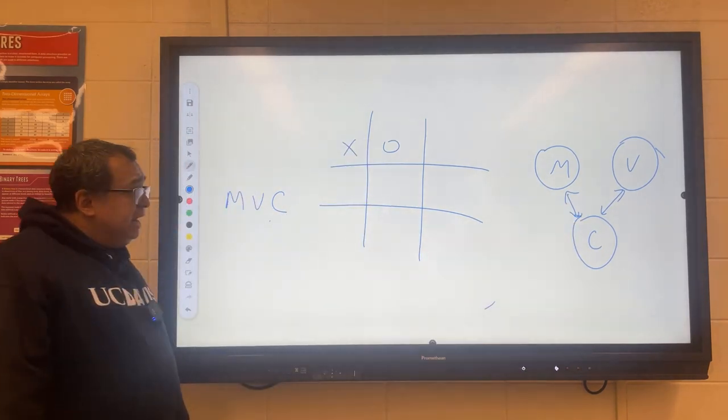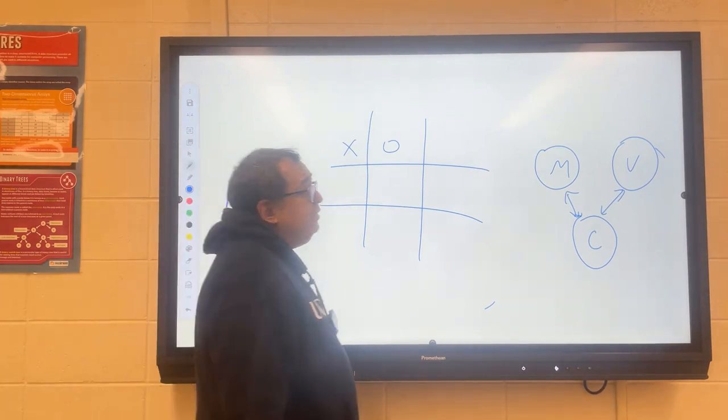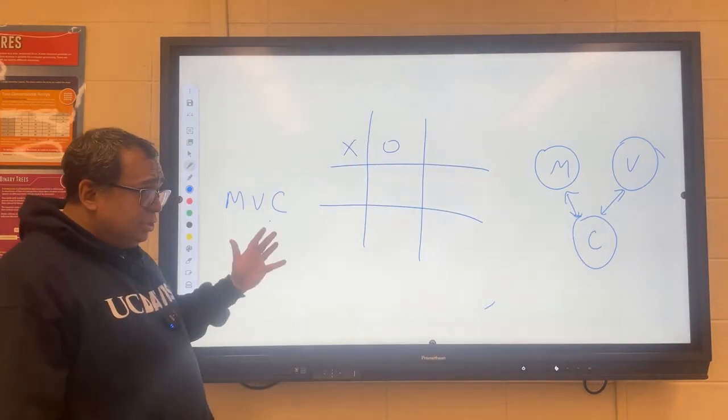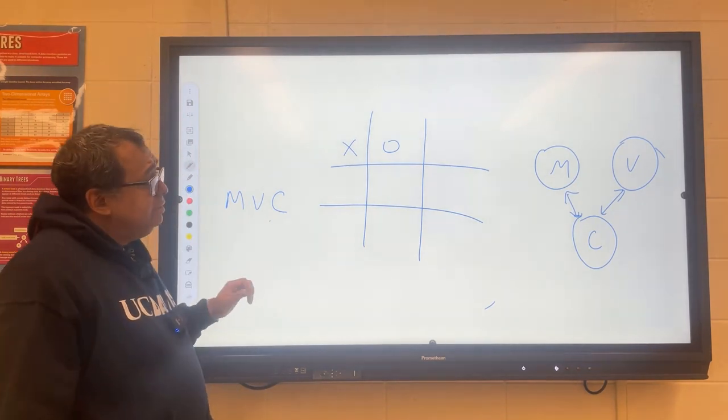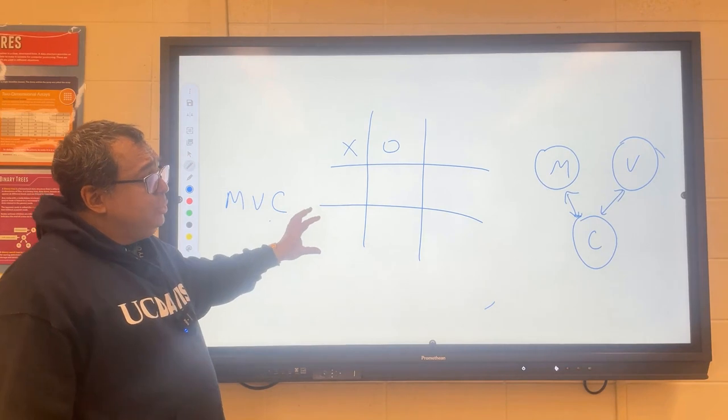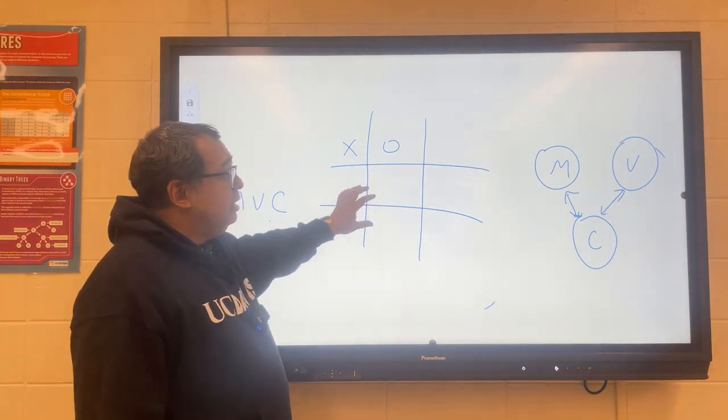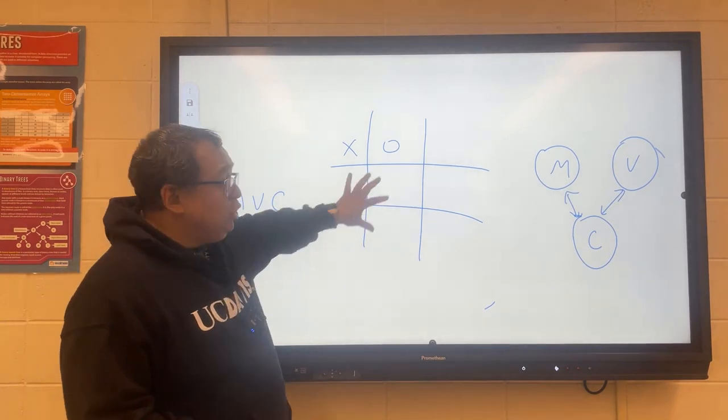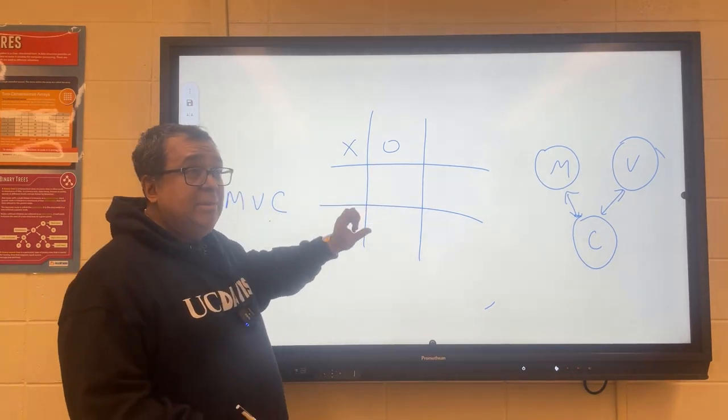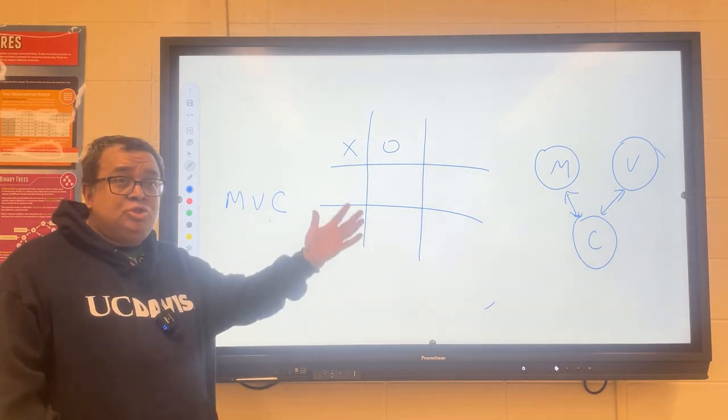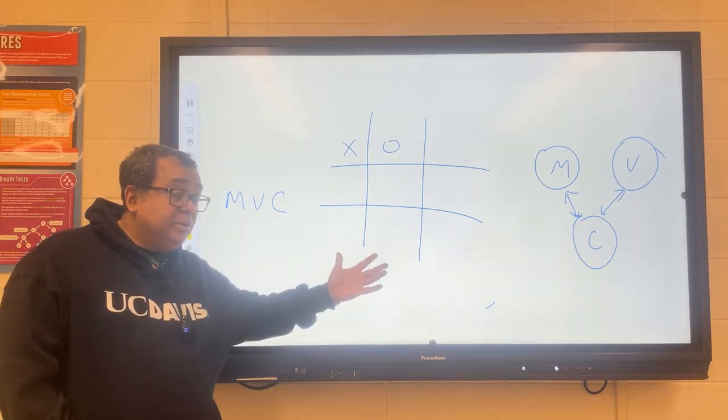The next thing I need to explain to you is why there should be a model and a view and why it can't be the same thing. Let's talk about this board and what you think the computer's view of the board should be. How should we code this board and game? What kind of data structures—integers, strings, decimal numbers, booleans?